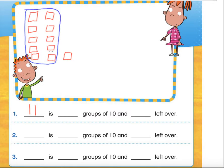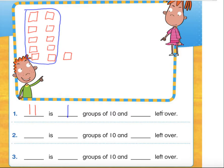Now that we've found a group of ten, we're going to circle it. So how many groups of ten are in the number eleven? We just made one, and we only made one. So on this next line we're going to write 1. And how many are left over? When they say left over, they want to know how many ones are outside of what we circled. We just have one box, so on this last line we're going to write 1.